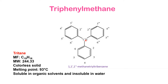For the molecular formula: three benzene rings give 6×3 = 18 carbons, plus the central carbon makes C19. Each ring carries five hydrogens since one position is substituted, giving 15 hydrogens, plus the one central hydrogen makes 16. So the molecular formula is C19H16.